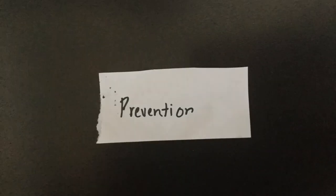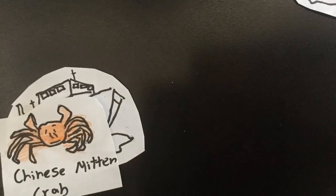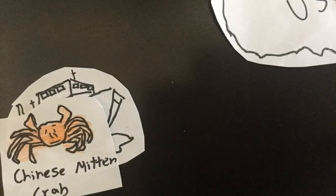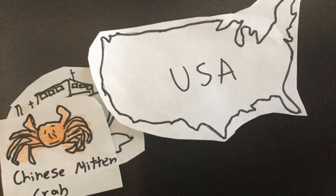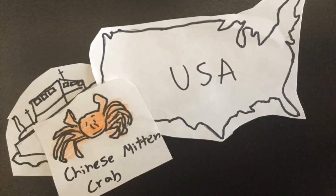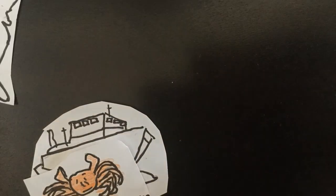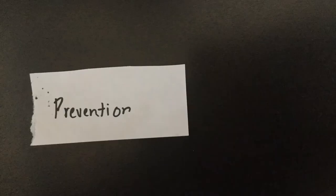To prevent the spread of Chinese mitten crabs, boat riders can clean their boats before going to another location and stop moving organisms from one body of water to another. To prevent introduction of species, we can stop intentionally bringing non-native species as pets or population controllers.